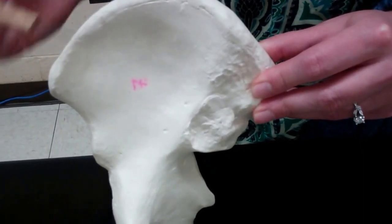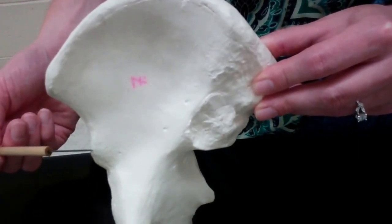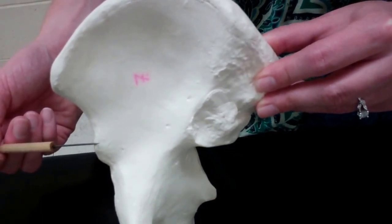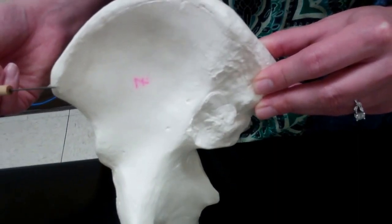The first little bump we can see on the anterior portion is called the anterior inferior iliac spine. Nothing like a mouthful. And then just above it is the anterior superior iliac spine.